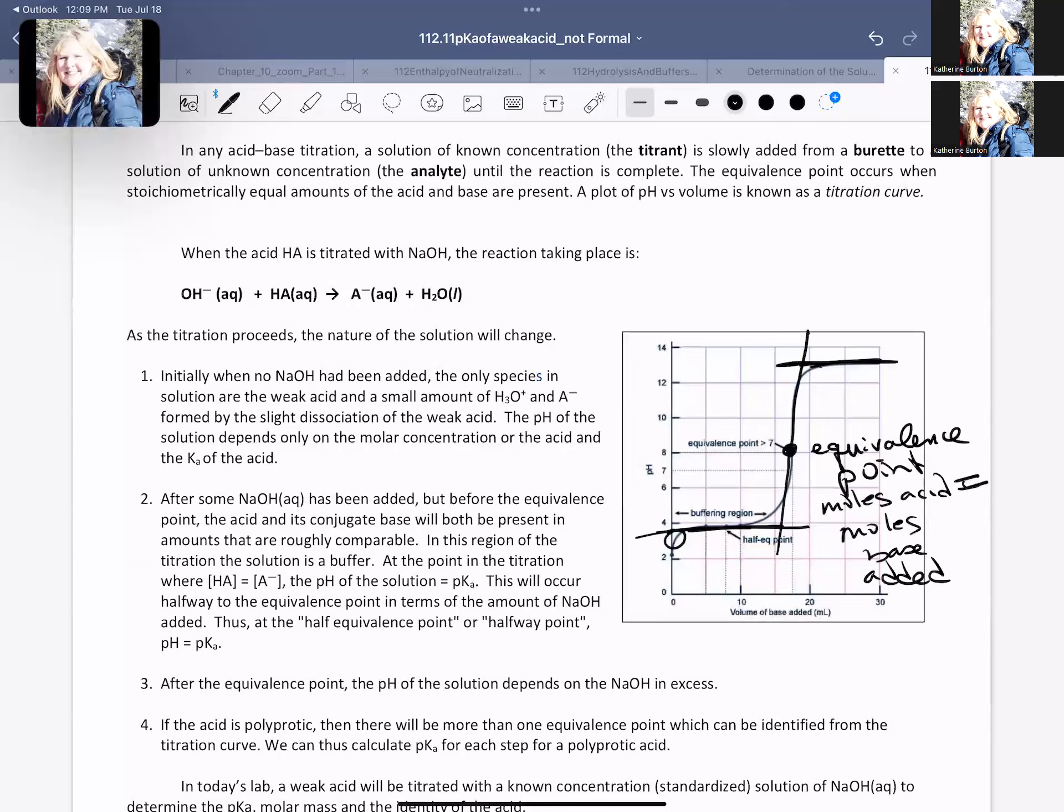And we know how many moles of acid we have, that the grams over the moles of our acid is going to give us our molar mass. We're going to get our moles of our acid from the moles of the base added, and we are going to get that from the equivalence point.